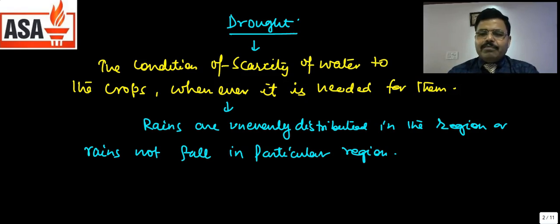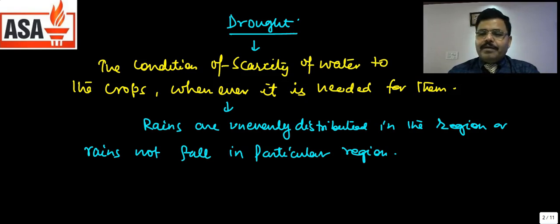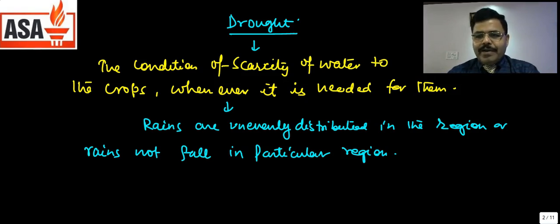It means agriculture practices mostly depend upon the rain situation. Whenever rains are timely at different stages, the production of crops will be much higher than expected. But when rains are not timely, the situation will be adverse. And when there is no rain, there is no crop production. Agricultural practices in India mostly depend upon the rain situation and monsoon.